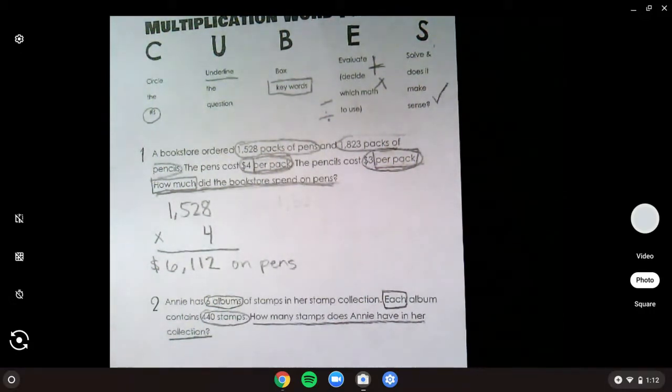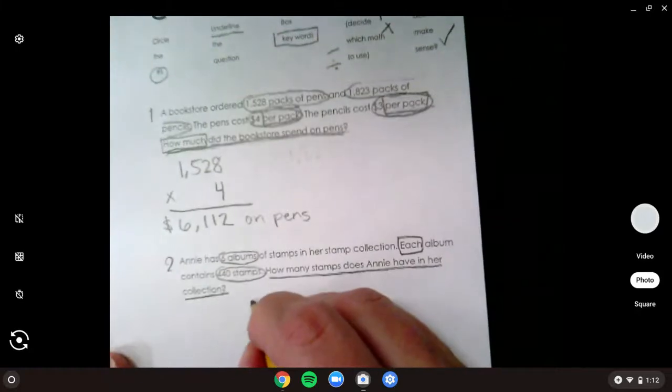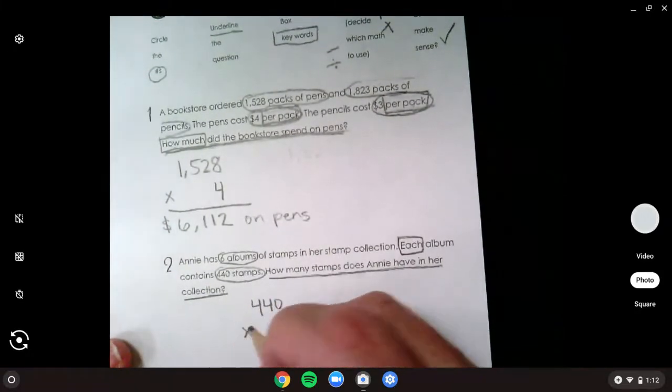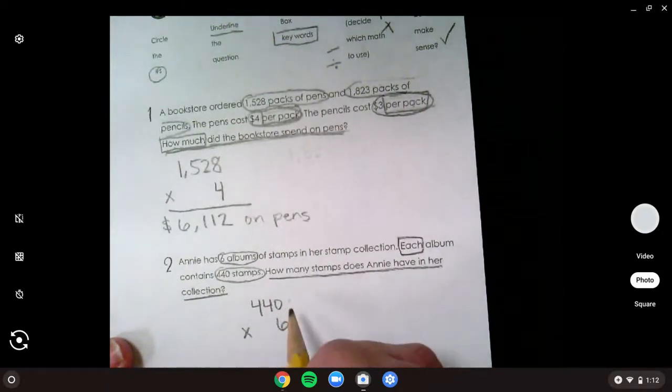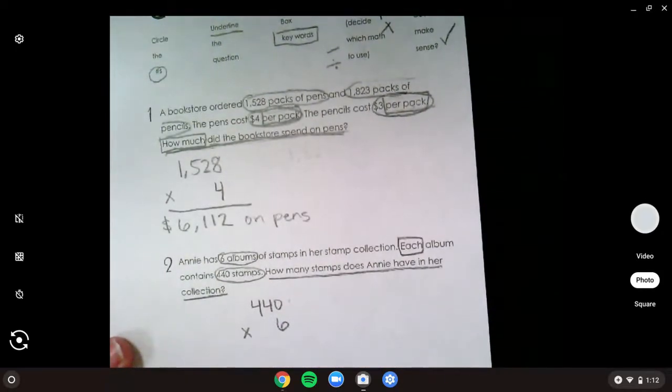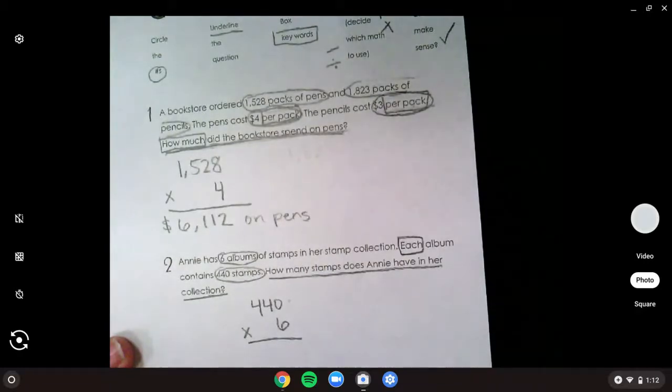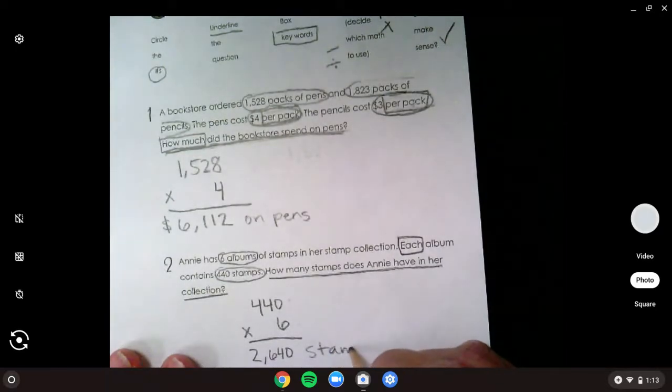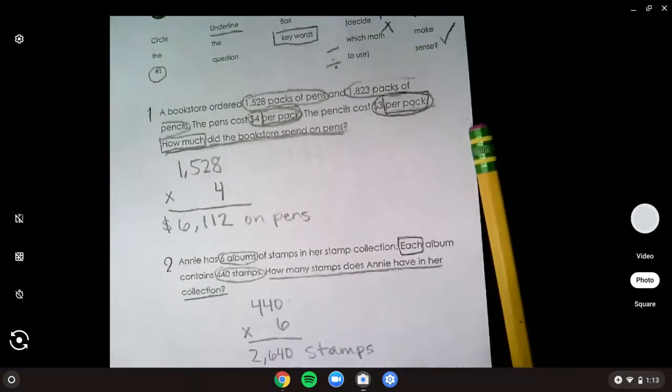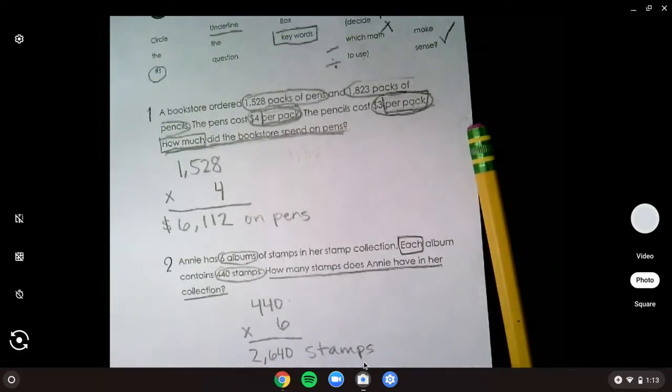Thomas, what did you and Rose do? We did 440 times 6. 440 times 6, because I know each album has that 440, and she has how many of those albums? She has how many albums? Six. Six albums. If we do our math correctly, then we should get 2,640, but that is not a fourth grade answer. Miss Camille, what would make it a fourth grade answer? Stamps. Stamps, 2,640 stamps.